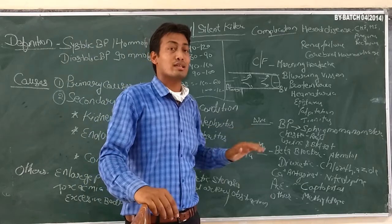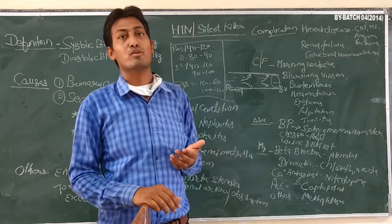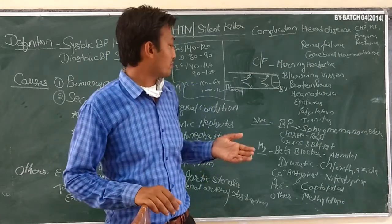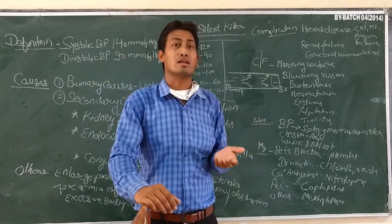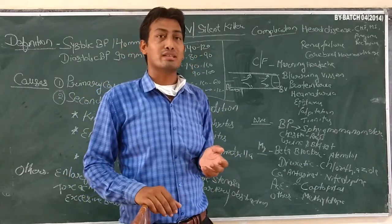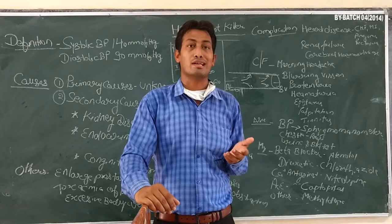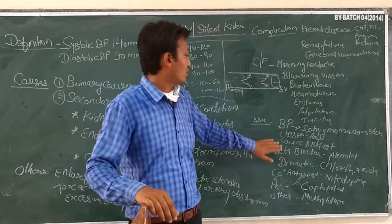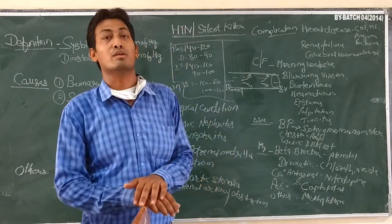For diagnosis, we use a sphygmomanometer to check the patient's blood pressure. The patient can also have an X-ray for cardiomegaly, urine examination to check for proteinuria, and blood tests including sodium and potassium levels.